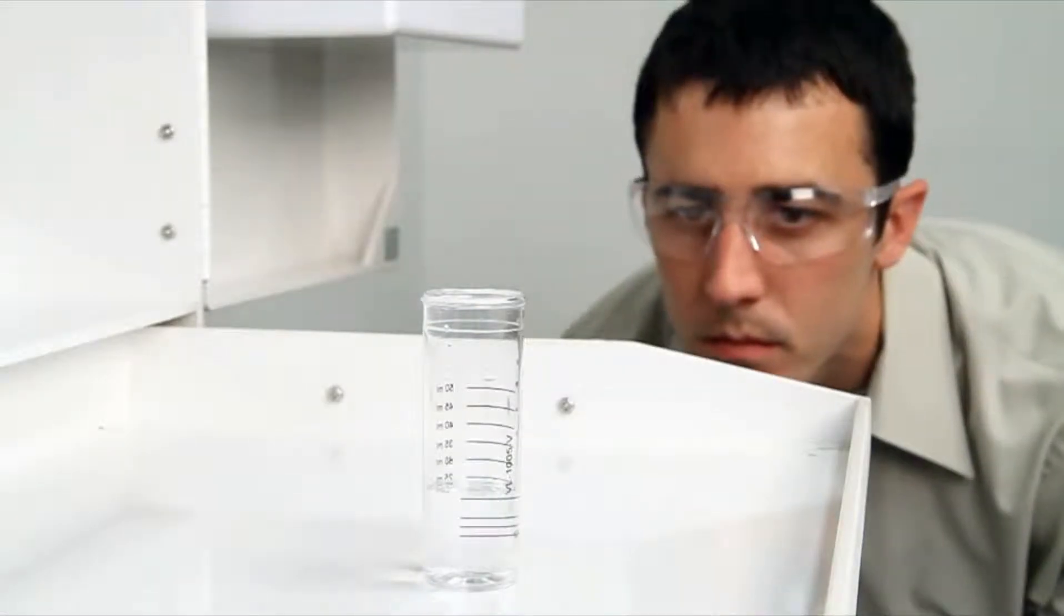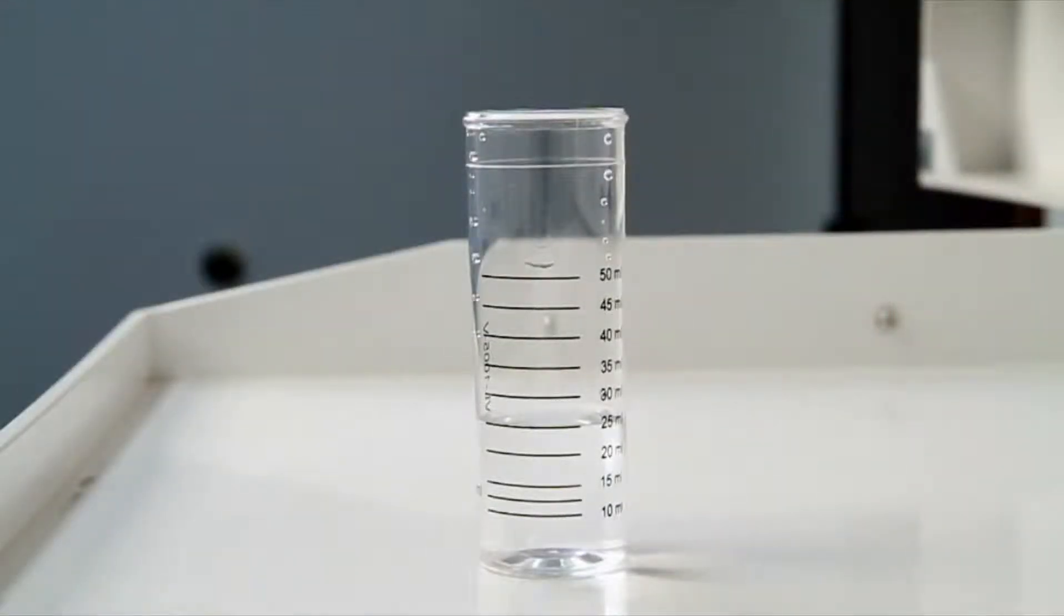When performing a drop count titration, a white background can provide contrast to better see the color changes. A cabinet tray or a white paper towel can provide that contrast.